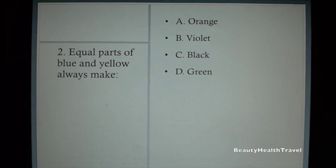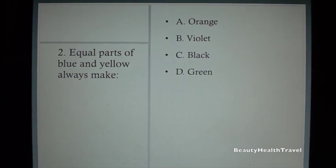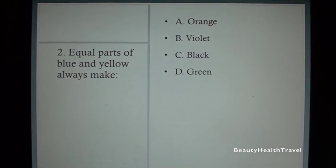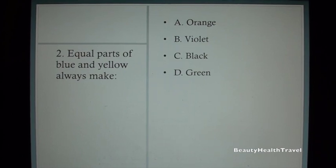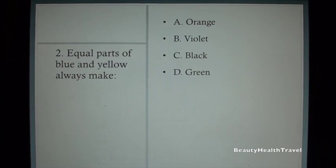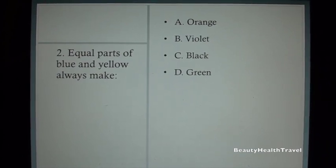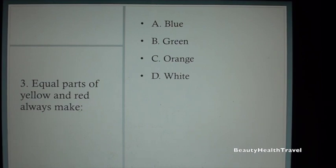Question 2: Equal parts of blue and yellow always make: A. Orange, B. Violet, C. Black, D. Green. Question 3: Equal parts of yellow and red always make: